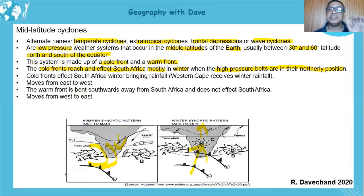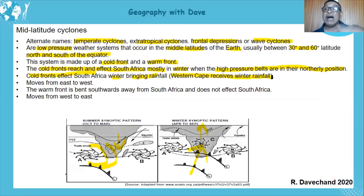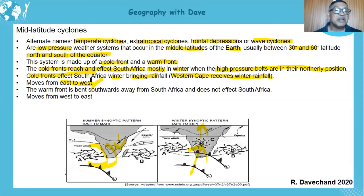That is why cold fronts affect the country mostly in winter, bringing rainfall. The Western Cape receives winter rainfall because of the Mediterranean climate and because of the cold fronts coming in, uplifting the warm air, creating condensation and cloud cover, resulting in rainfall.